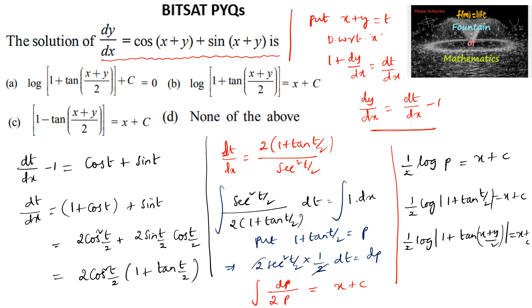Let me correct an error here: the differentiation of tan gives secant squared, and the differentiation of t/2 gives 1/2, so we get (1/2)secant²(t/2). This means secant²(t/2) divided by 2 gives dP, so the final answer is log(1 + tan((x+y)/2)) = x + c, which is option B.